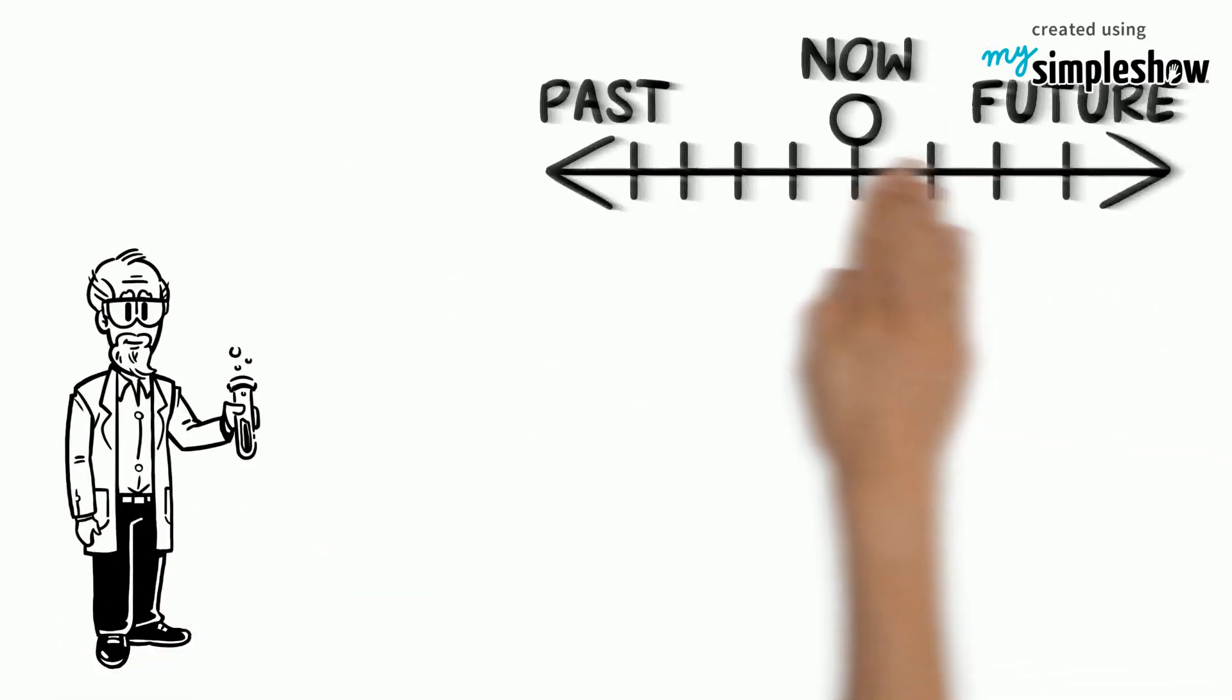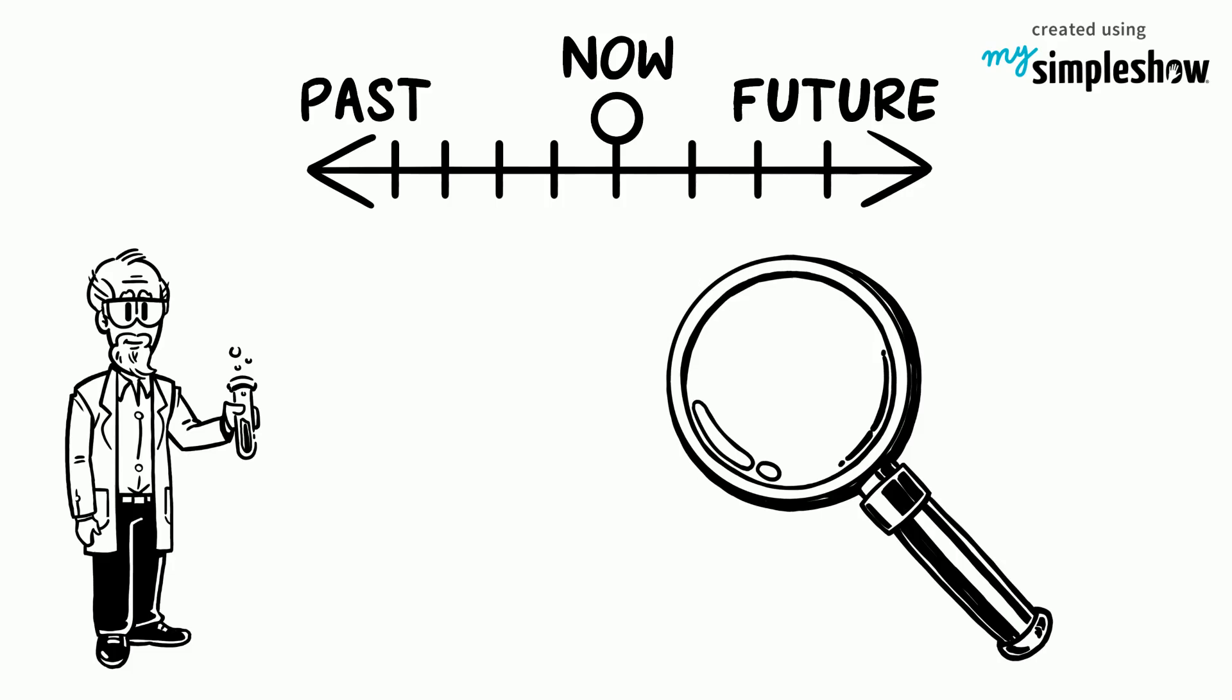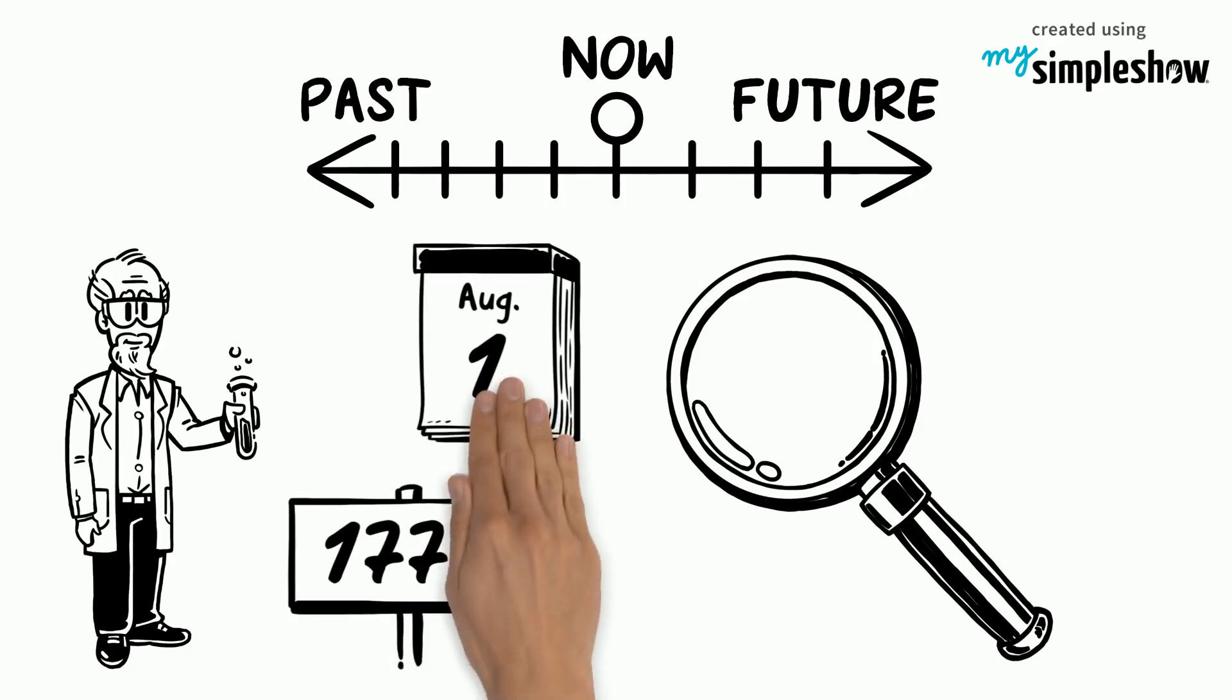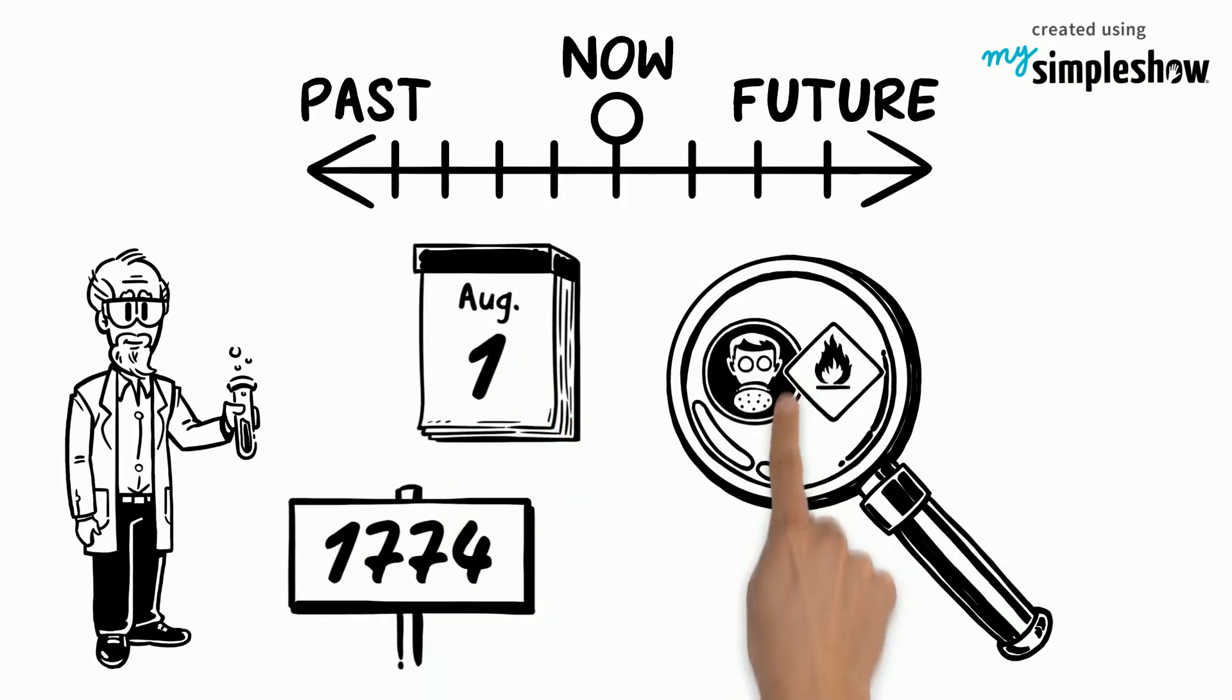It was Joseph Priestley who more than 200 years ago made the astonishing discovery on August 1, 1774, when he obtained a colorless gas by heating red mercuric oxide.